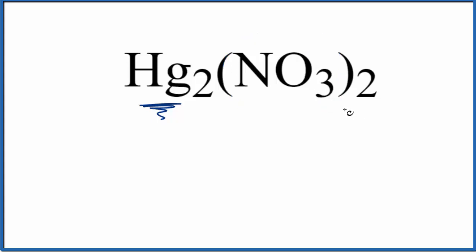So to write the name, since we have a metal and a group of nonmetals, we'll treat this as an ionic compound. First, we write the name for Hg as it appears on the periodic table. That's just mercury.